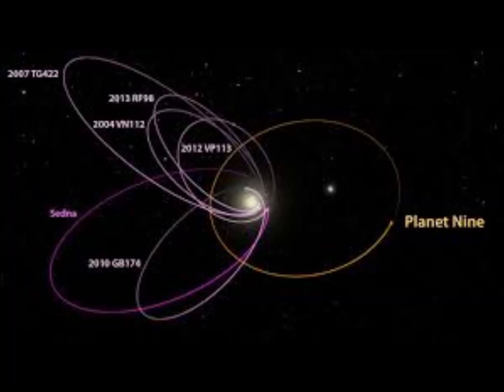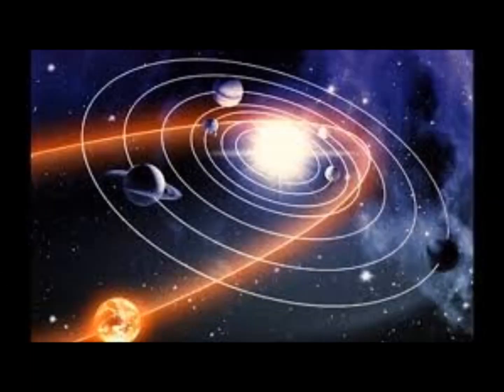The search for Planet 9 began in 2014 after astronomers Chad Trujillo and Scott Shepard suggested that a large and unseen planet may exist beyond Neptune.